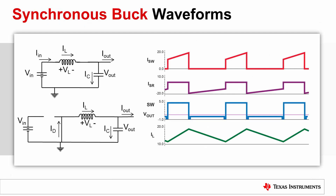We've discussed how the buck converter operates and derived the duty cycle using the steady-state inductor principle. Now let's review some of the common voltage and current waveforms. When the control switch is on, the voltage at the switch node is high, as shown in blue. The switch current, in red, immediately jumps to the present value of the inductor current. As the inductor charges, the switch current increases, equaling the inductor current, shown in green. When the control switch toggles low, the synchronous rectifier or diode rectifies the inductor current. The inductor discharges until the next switching cycle.